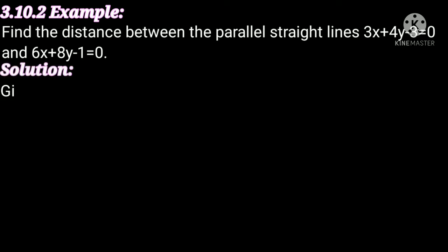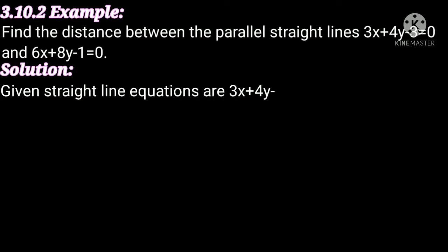Given straight line equations are: 3x plus 4y minus 3 equal to 0 — this is equation number 1; and 6x plus 8y minus 1 equal to 0 — this is equation number 2. Now we will find the distance between the given parallel lines 1 and 2.